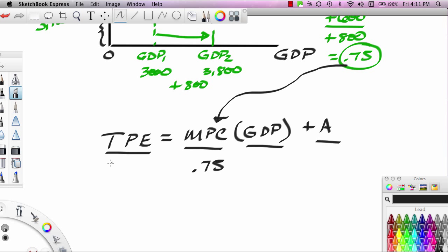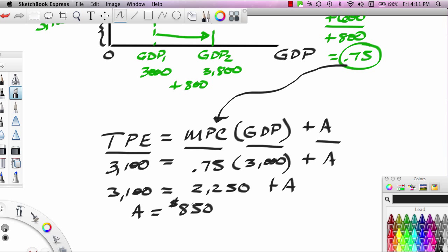When TPE is 3,100, GDP is 3,000. We just simply pull that coordinate off the line. We don't know what A is. That's what we're solving for. We've got 3,100 equals 0.75 of 3,000. That's 2,250 plus A. We can solve for A here. It's going to be 3,100 minus 2,250. And that looks to me like 850. So our Y-intercept, or what we call autonomous expenditures, is 850.